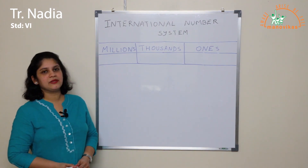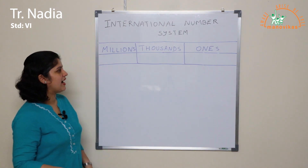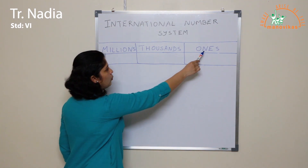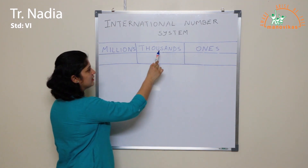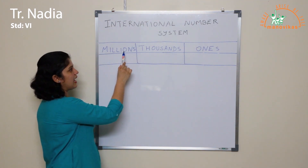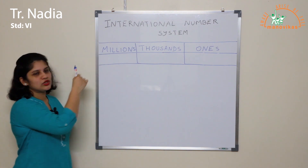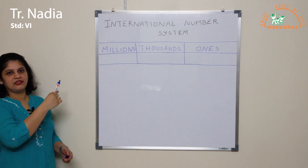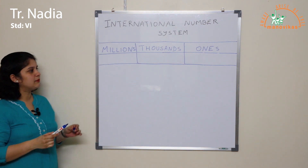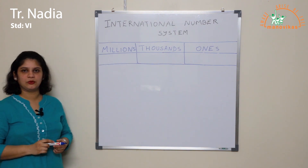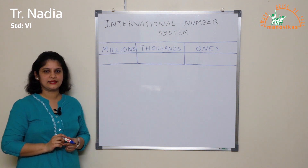The International Number System is divided into three periods: the Ones, the Thousands, and the Millions. There is also a period further ahead, but as of now we have only learnt up to the Millions.